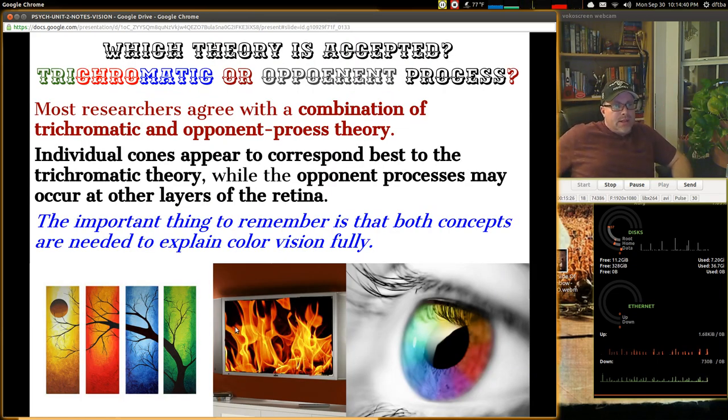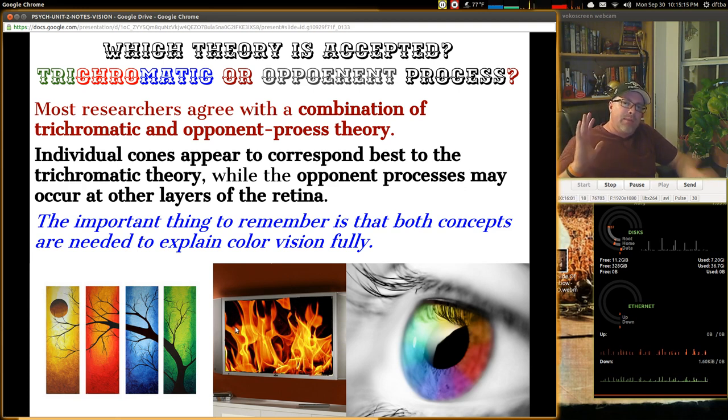Another way of thinking about this is, and putting this together is, which theory is most accepted today? Is it trichromatic or opponent process theory? Most researchers agree that a combination of both, both trichromatic and opponent process theory are needed to help explain color. The individual cones appear to correspond best to the trichromatic theory, while the opponent processes may occur at the other layers of the retina. So that's helpful to see that there is a little bit of disparity here in difference, but if you kind of combine both of the theories together, it makes some sense. We'll see this a lot in psychology. There would be like two major theories that when you put them together seem to help answer the problem. So the important thing to remember is that both concepts are needed to explain color vision in a full way.